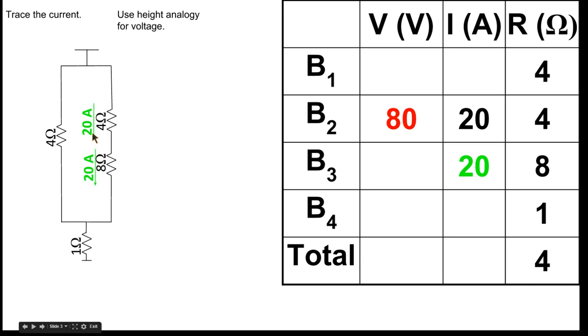Remember, we're thinking of them as flowing charges. And since these flowing charges aren't splitting up between that 4 ohm resistor and that 8 ohm resistor, the current has to be the same at both locations. So that's why we filled that out there.